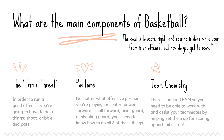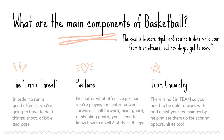Now, what are the main components of basketball? We know the goal is to score, and scoring is done while your team is on offense. The first component I like to call the triple threat. In order to run a good offense, you're going to need to know how to do three things: shoot, dribble, and pass.